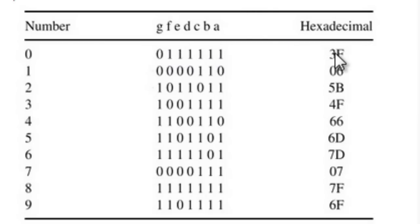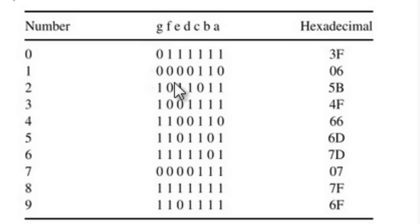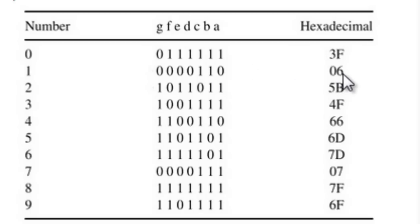To display digit 1, segment A should be 0 and only segments B and C should be switched on. Using binary makes it easy to see exactly which segments are on or off. The corresponding hexadecimal value for 1 is 0x06.